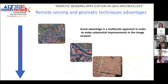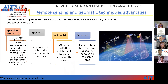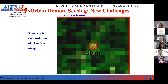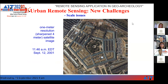The great advantage of all this is a multi-scale approach, which makes substantial improvements in image analysis. You can study an area from small up to very large scale. Another great step forward is the improvement in spatial, spectral, radiometric, and temporal resolution. Spatial geometric resolution depends on the instantaneous field of view. Spectral resolution is the bandwidth in which the instrument is sensitive. Radiometric resolution is the minimum radiation able to give a signal on the sensor. Temporal resolution is the lapse of time between two subsequent surveys on the same area.